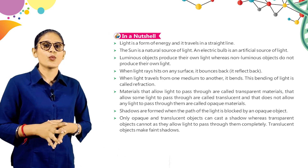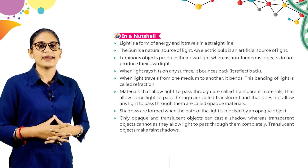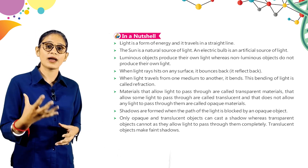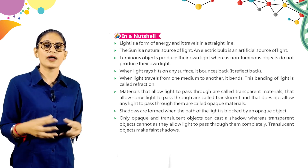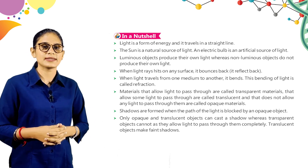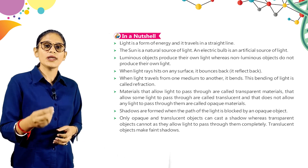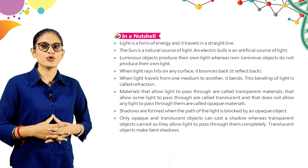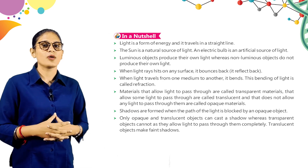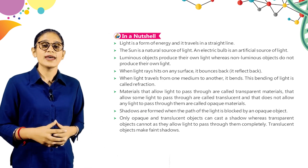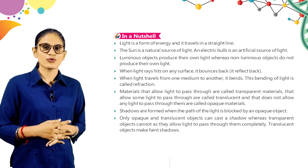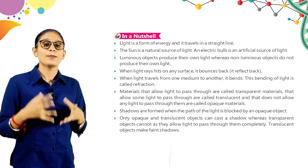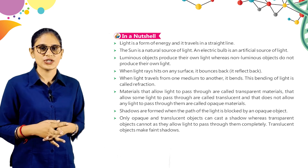Shadows are formed when the path of light is blocked by an opaque object. Only opaque and translucent objects can cast a shadow, whereas transparent objects cannot, as they allow light to pass through them completely. Translucent objects make faint shadows.